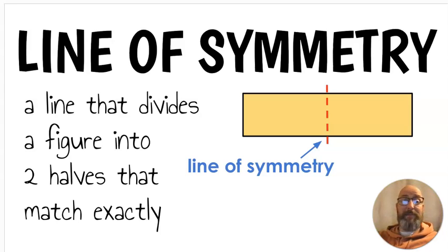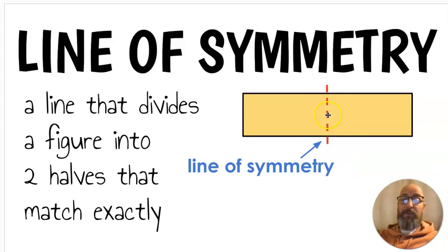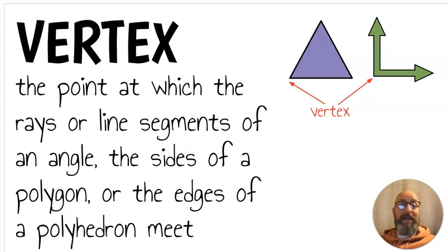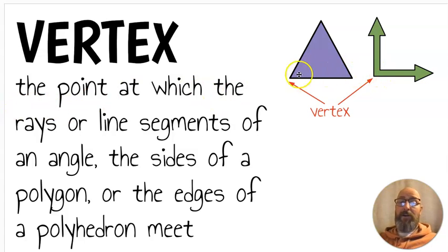Next we have line of symmetry. A line of symmetry is a line that divides a figure into two halves that match exactly. I have a line of symmetry here breaking this bigger rectangle into two rectangles that are the exact same — the line of symmetry breaks it exactly in half. Next we have the word vertex. A vertex is the point at which rays or line segments of an angle, or the sides of a polygon, or the edges of a polyhedron meet — those little corners are vertexes.